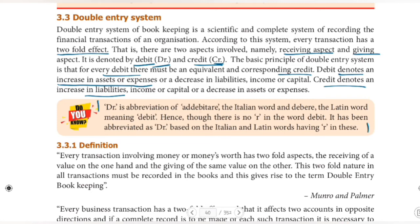DR is an abbreviation of the Italian word and the Latin word for debit. There is no R in the word debit itself. It has been abbreviated as DR based on Italian and Latin words that contain R. Similarly, CR stands for credit. So the debit word is abbreviated DR and the credit word is abbreviated CR.